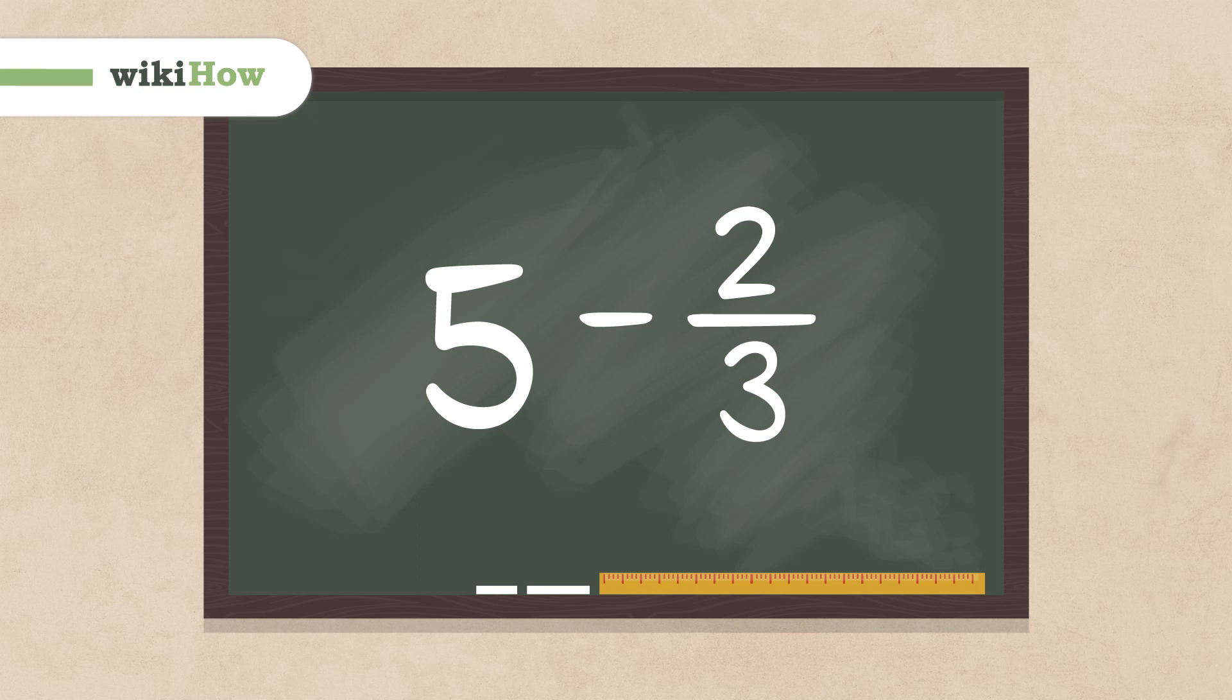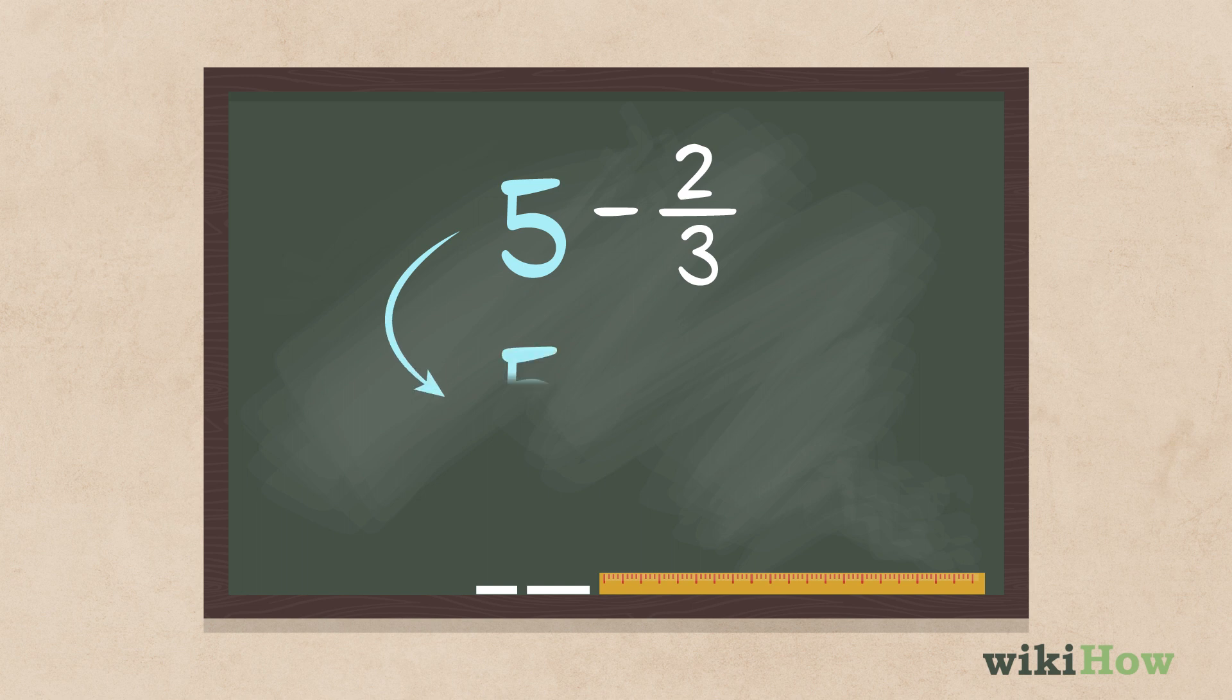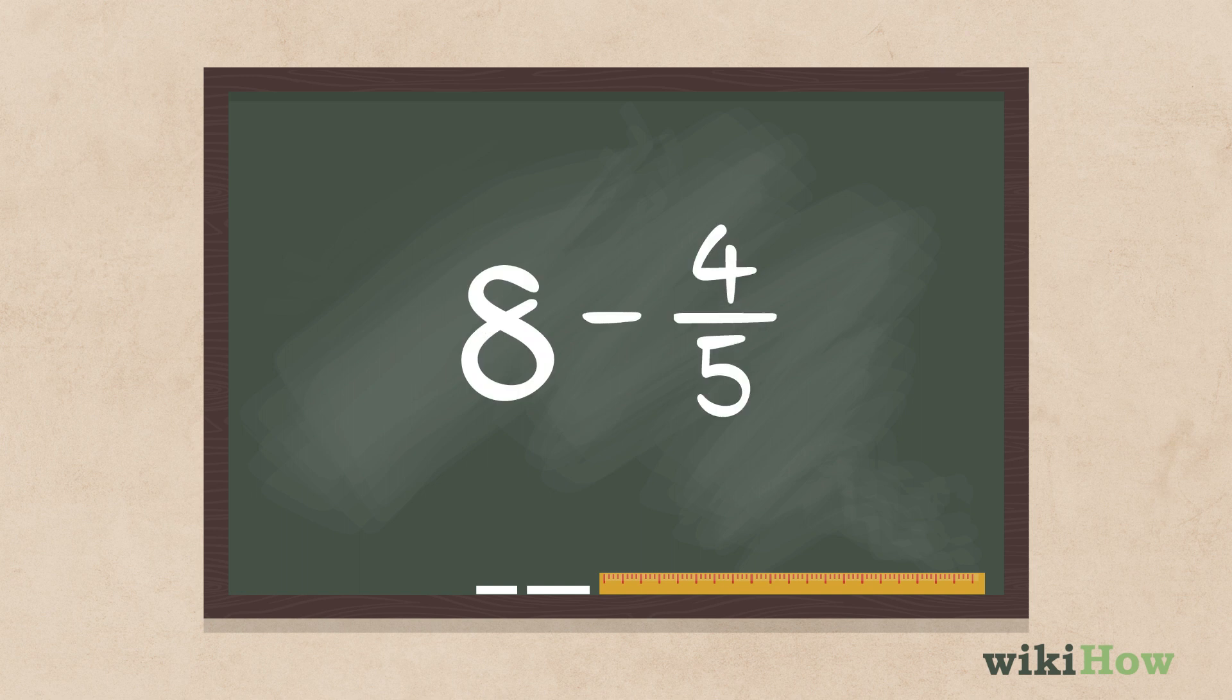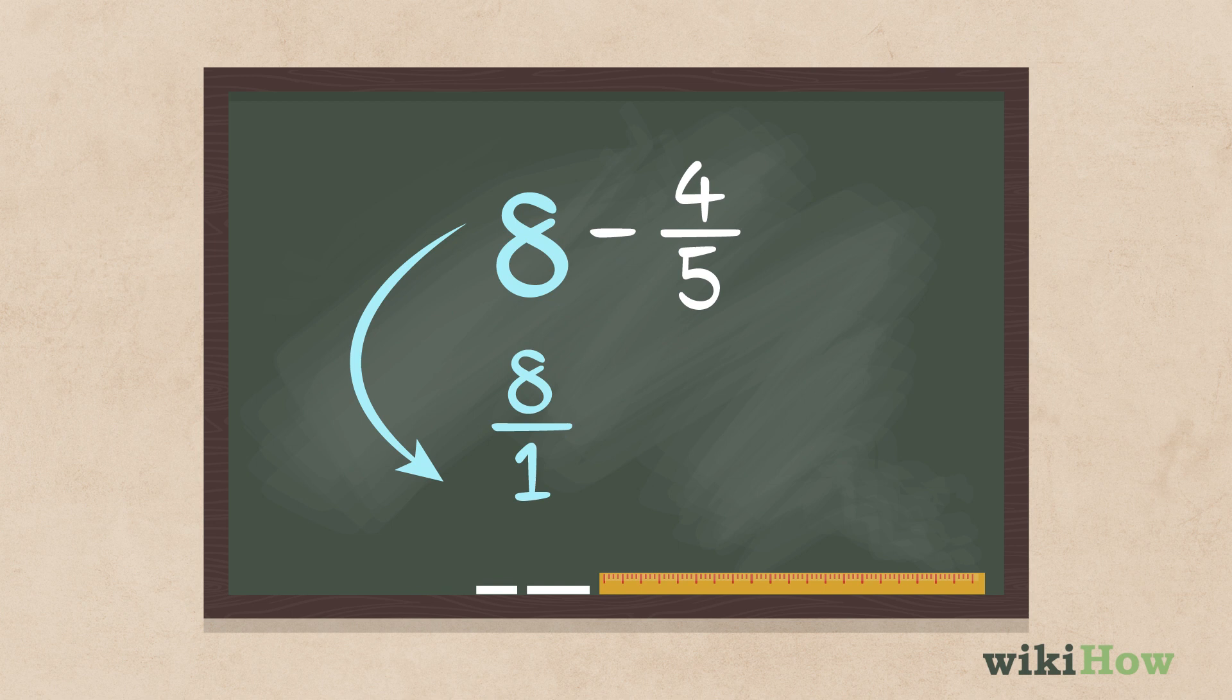To subtract a fraction from a whole number, start by converting the whole number into a fraction. Do this by giving the whole number a denominator of 1. For instance, if you're subtracting 4 fifths from 8, convert 8 into the fraction 8 over 1.